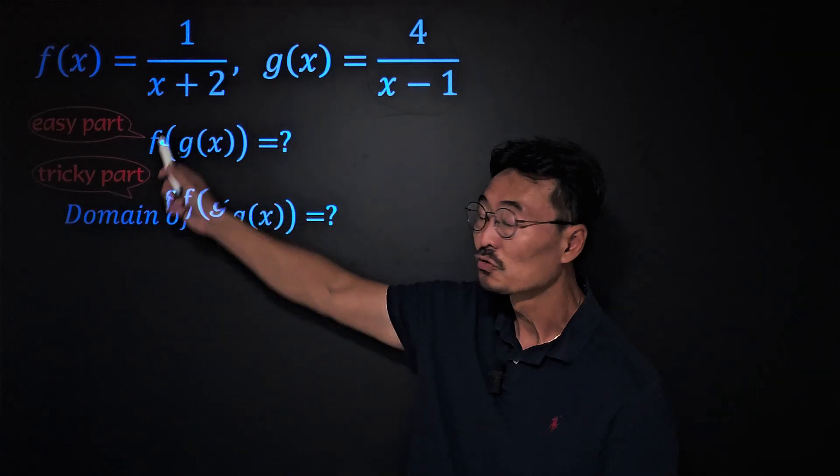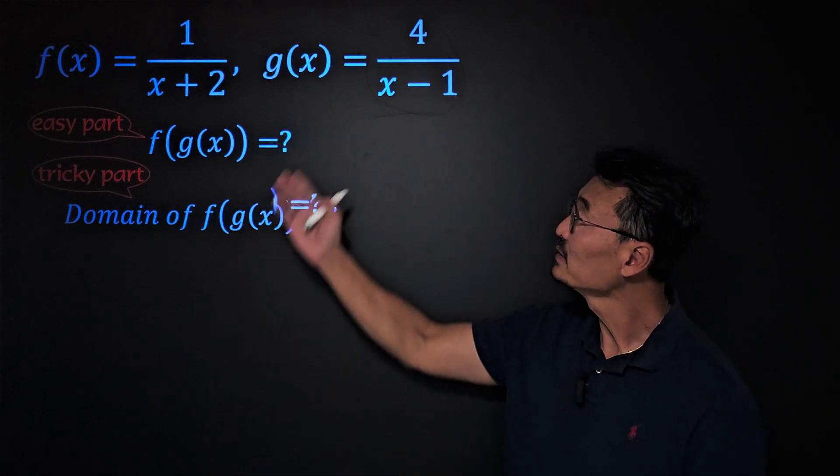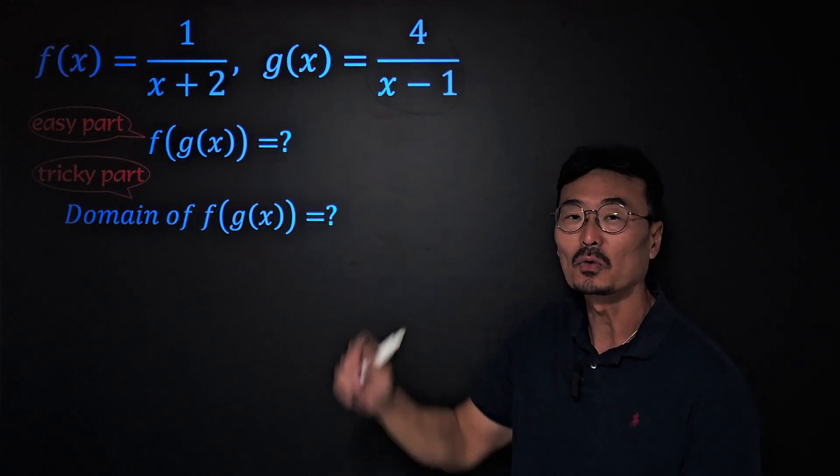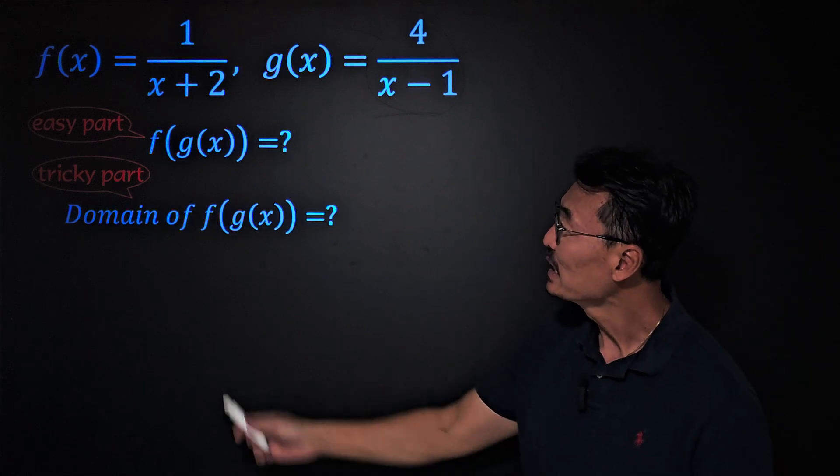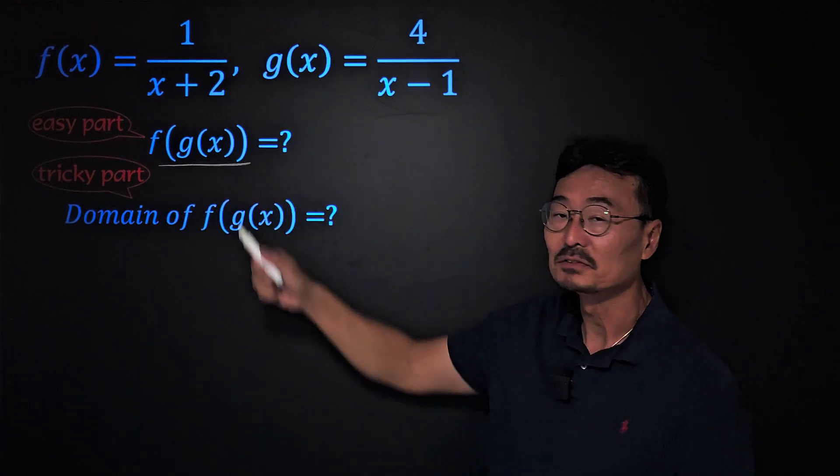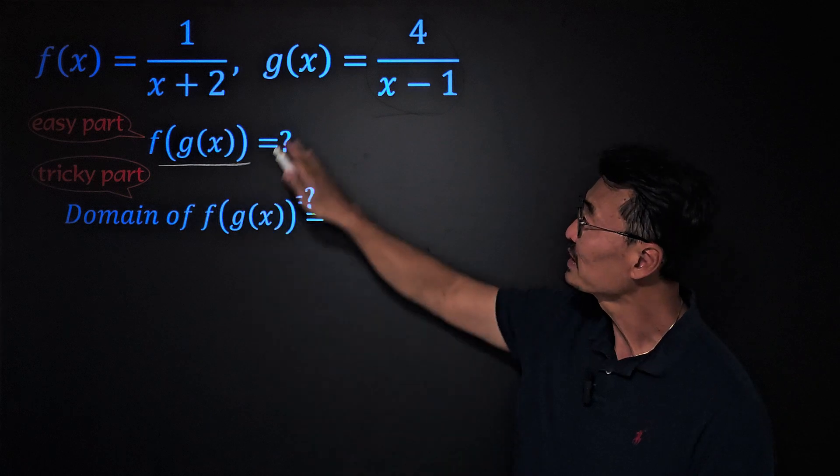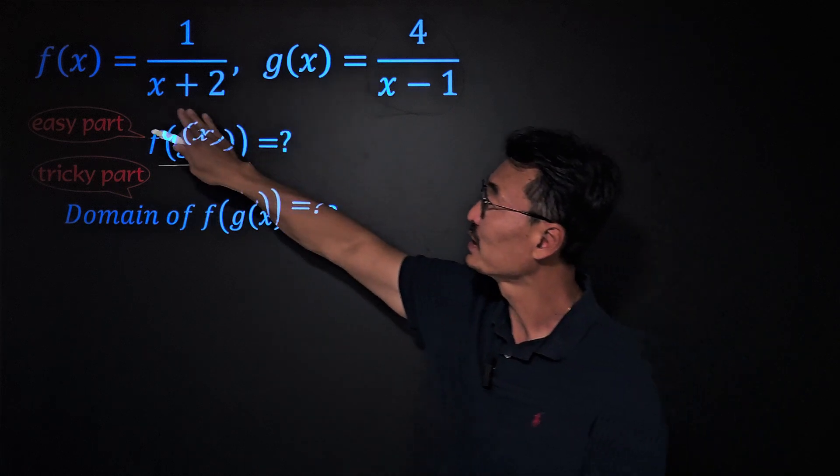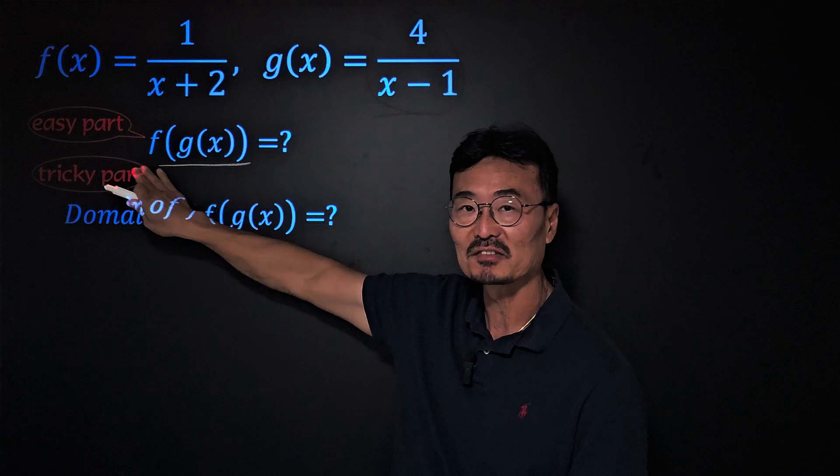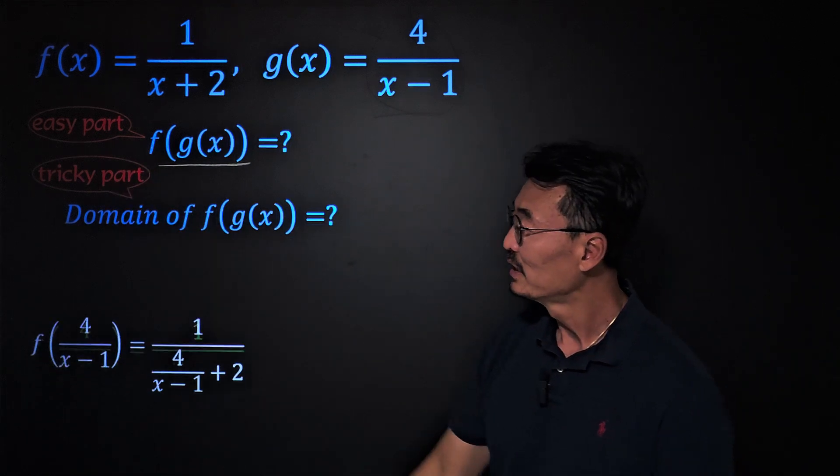Given f(x) = 1/(x+2) and g(x) = 4/(x-1), if we want to find f(g(x)), we take the g(x) and plug it into the x of the f(x). Here's what we're talking about.